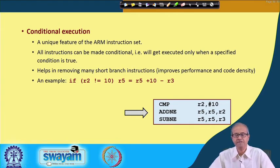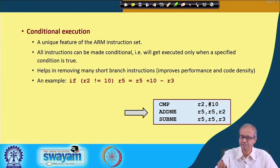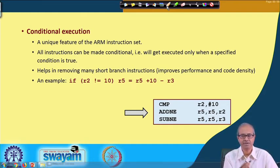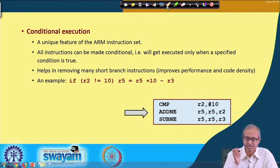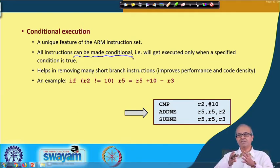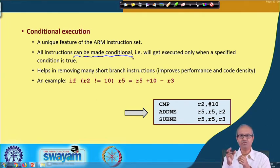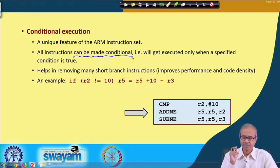A very important and unique feature of the ARM instruction set is conditional execution. This is something you normally do not see in other instruction sets. The designers have carefully included this feature, which says that instructions can be made conditional — they may either execute or not execute. Along with every instruction there is a field where a condition is specified; if the condition holds, the instruction executes, otherwise it does not.